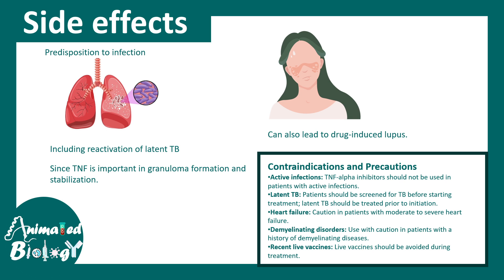If the patient is undergoing active infection where the inflammatory response is needed, blocking inflammation would be the wrong thing. So TNF-alpha inhibitors should not be used in patients who have active infection. Latent TB is also a problem. These drugs should be used cautiously in patients with severe heart failure. Any case of demyelinating disorders should avoid using this drug. And if the patient has a recent history of vaccines, this medication should be avoided.